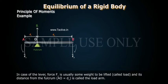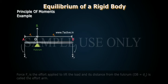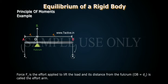In case of a lever, force F1 is usually some weight to be lifted, called load, and its distance from the fulcrum, AO is equal to D1, is called the load arm. Force F2 is the effort applied to lift the load, and its distance from the fulcrum, OB is equal to D2, is called the effort arm.